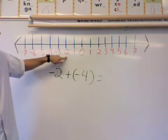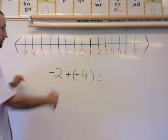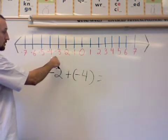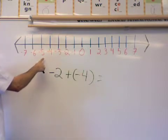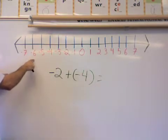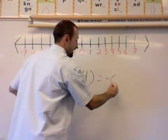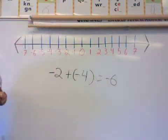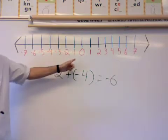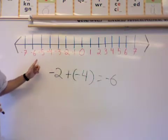So starting at negative 2 and I'm going to use my number line and move over 4 more places. So let's see where it takes us: 1, 2, 3, 4. So negative 2 plus negative 4 equals negative 6 because that's where I landed when I counted over 4 spaces from negative 2.